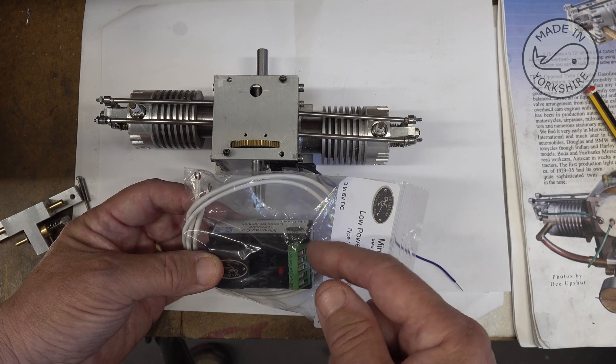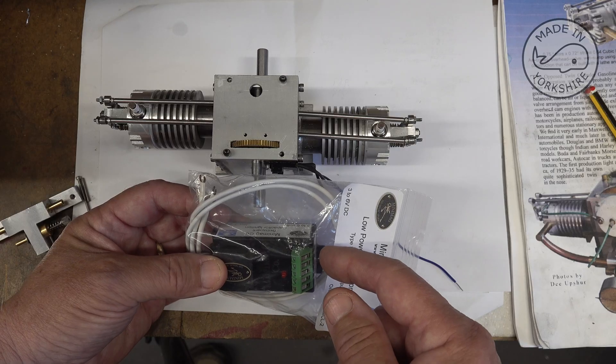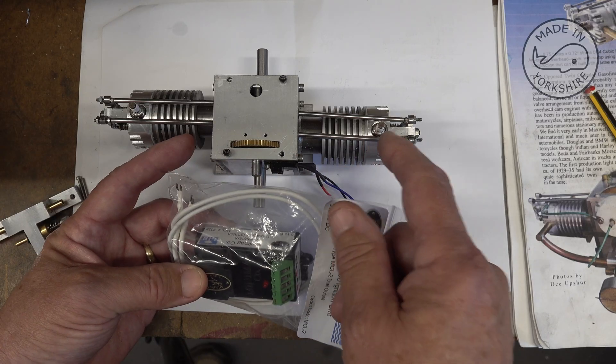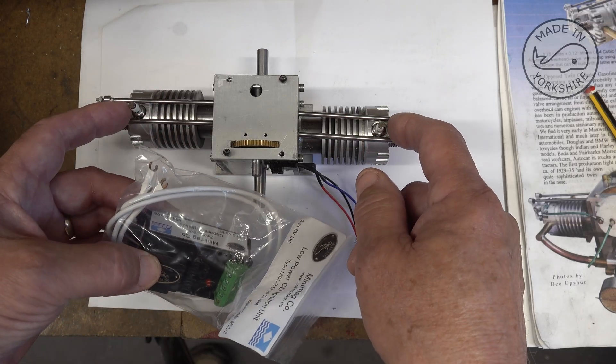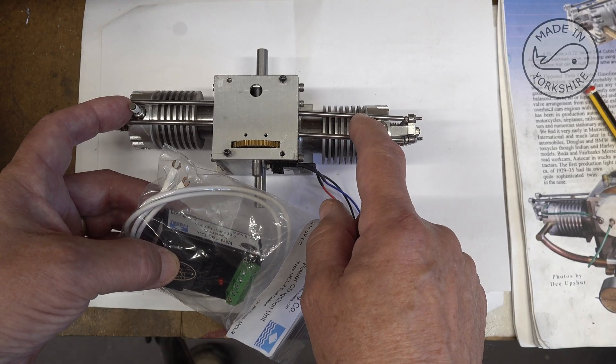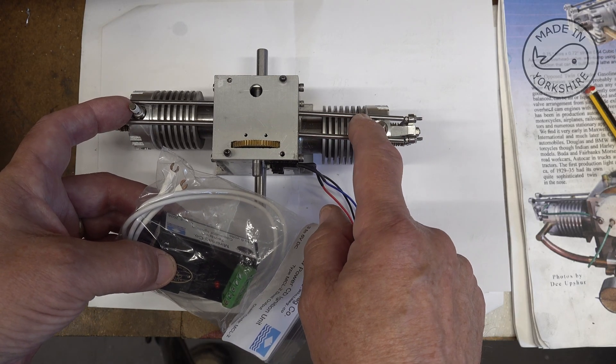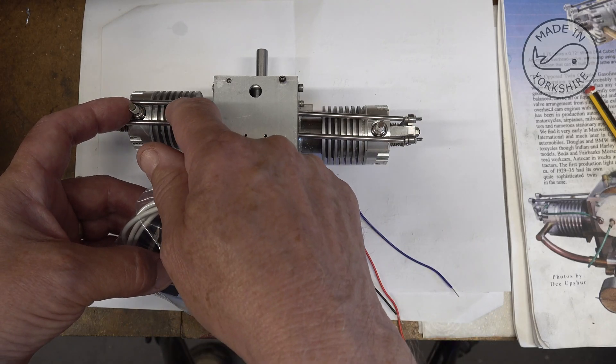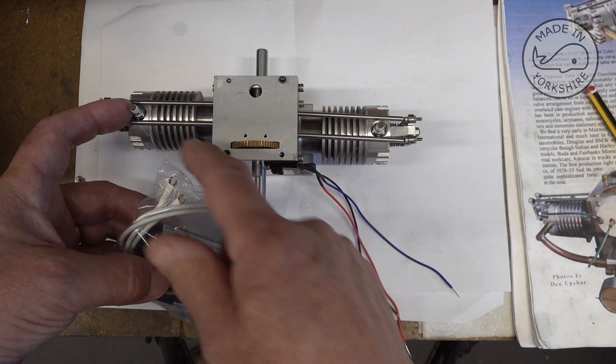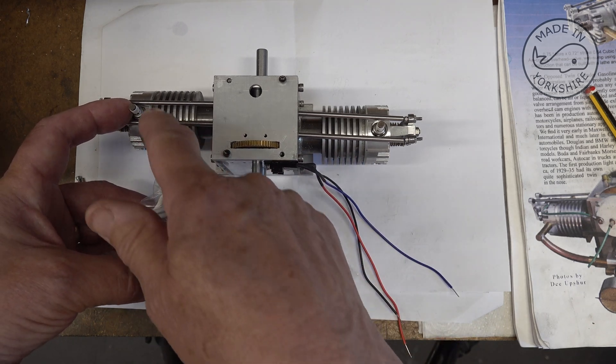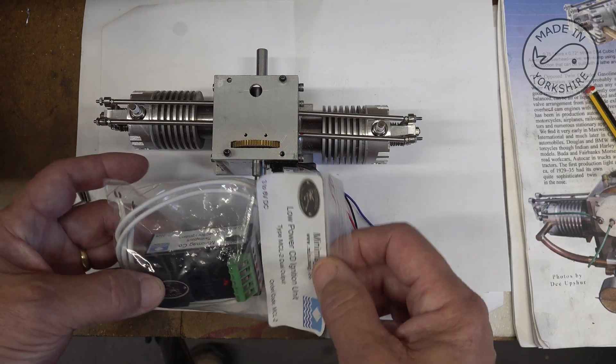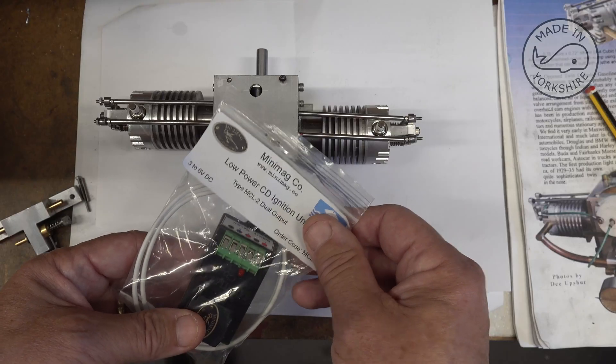So this engine will run on what I think they call a wasted spark situation. So both will spark on both sides on each cylinder. Obviously one cylinder will be under compression with fuel in it so that will fire. This one won't fire because there'll be no fuel in it at all, it'll just be a wasted spark. And likewise when this one's under compression with fuel in it, this one will fire but this one won't.